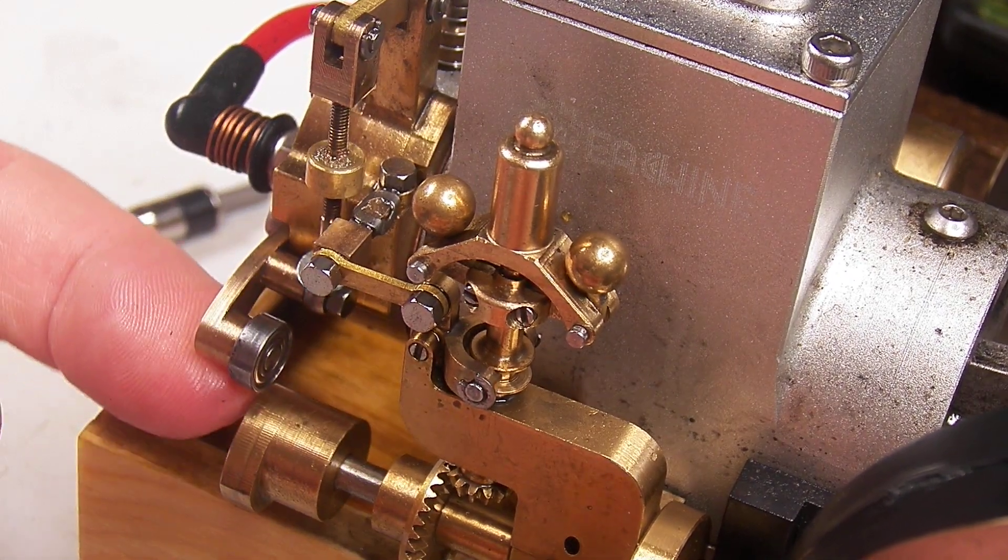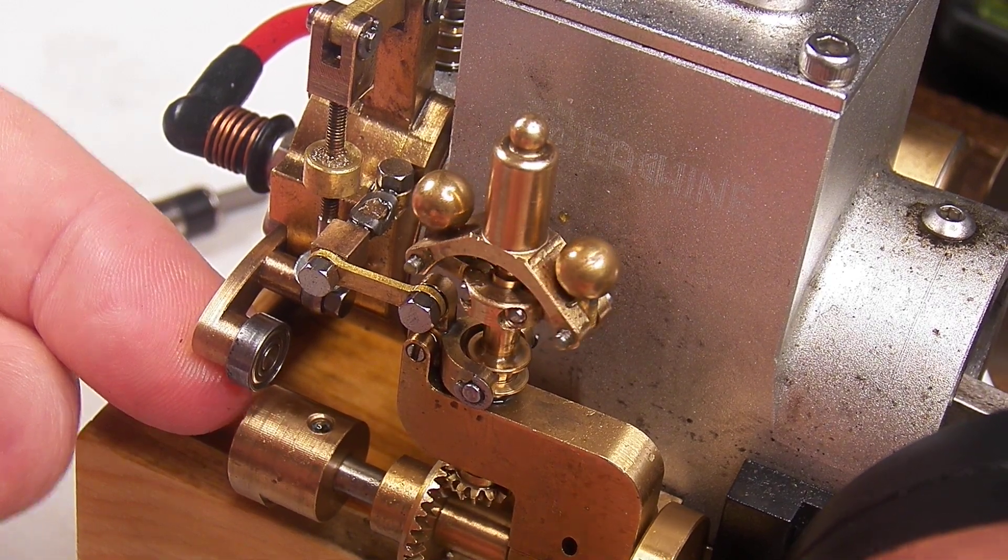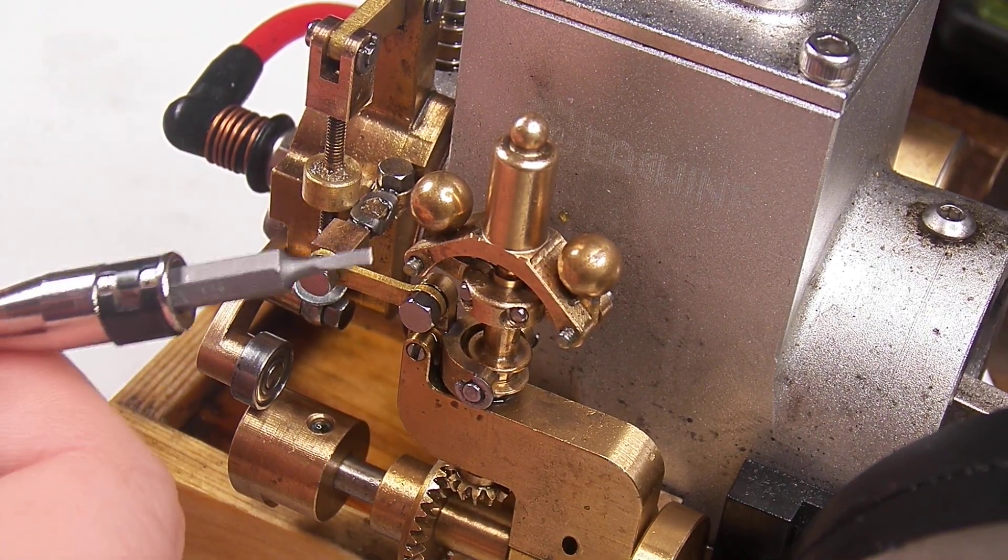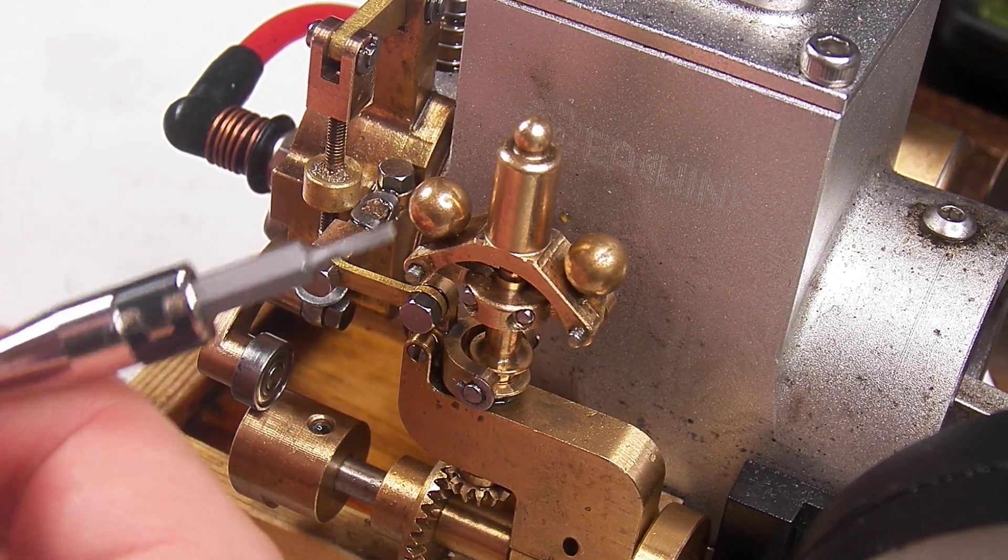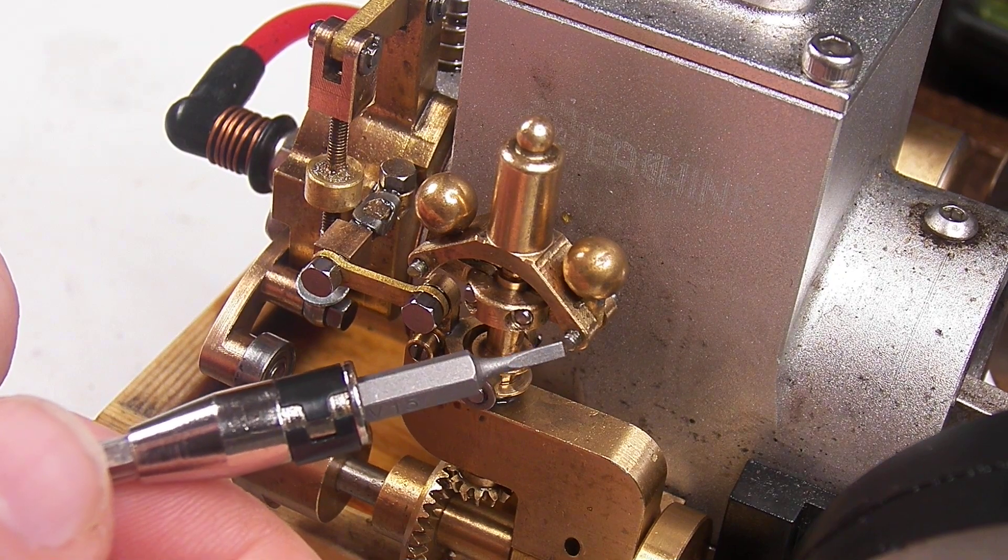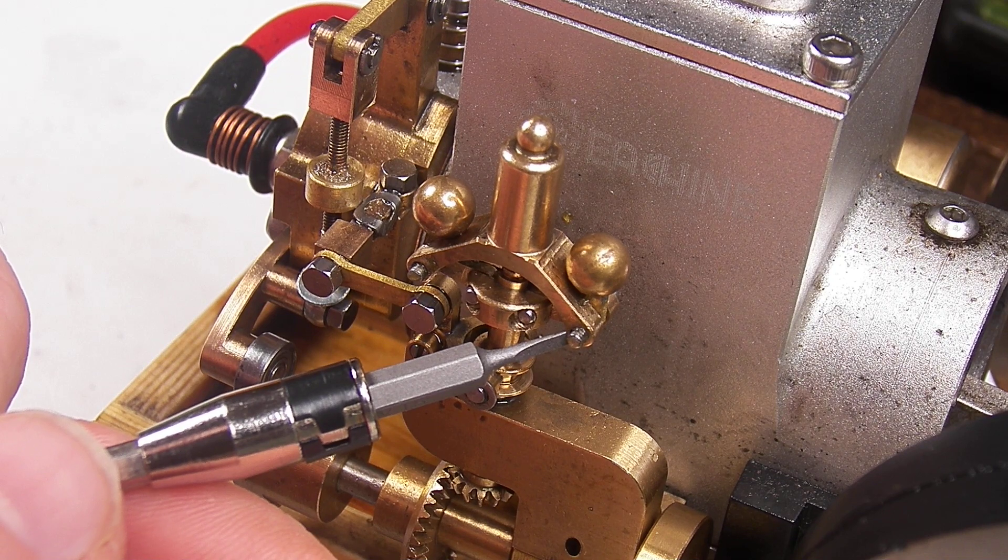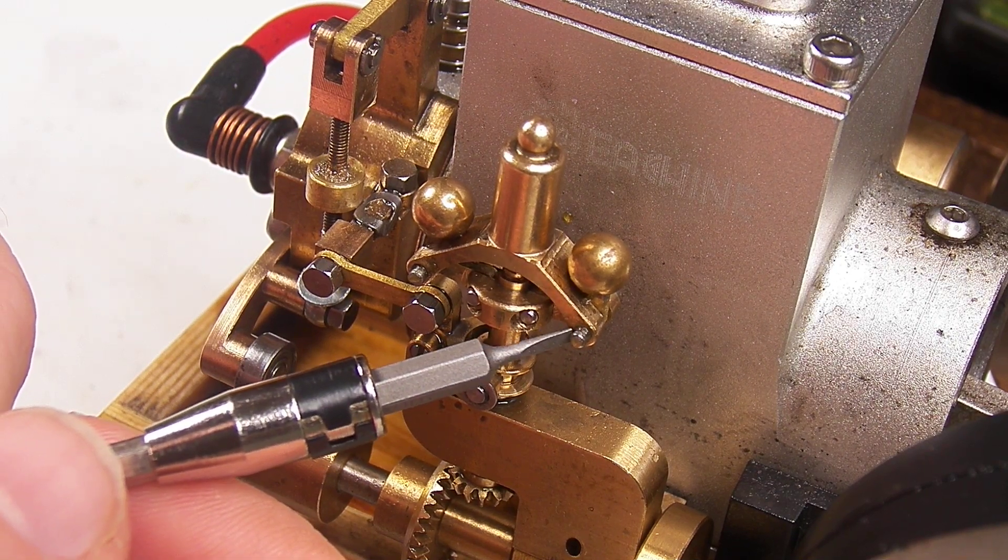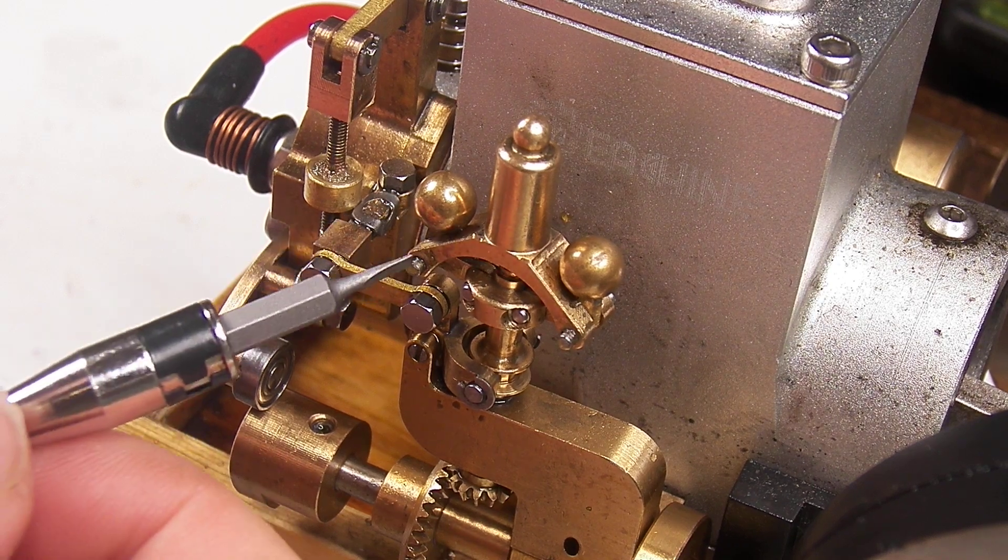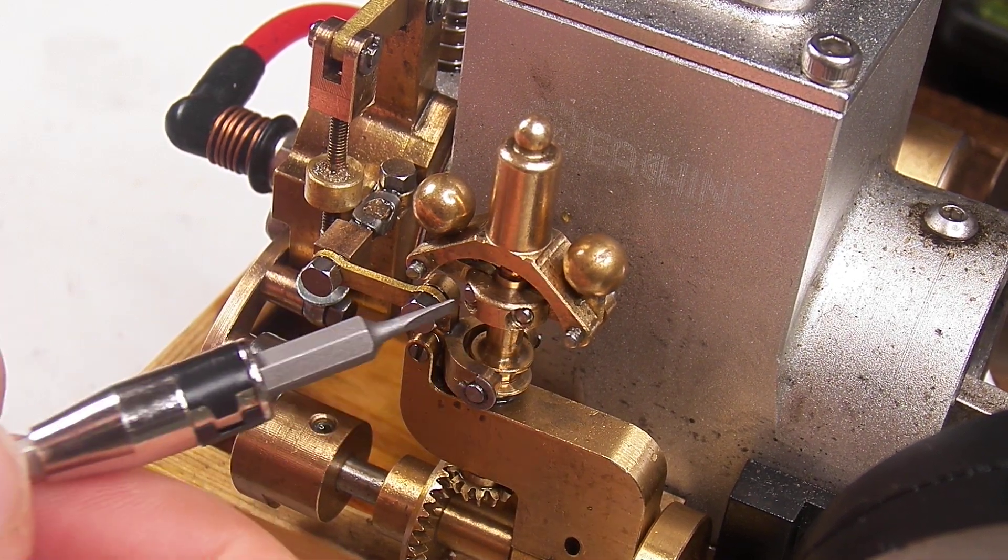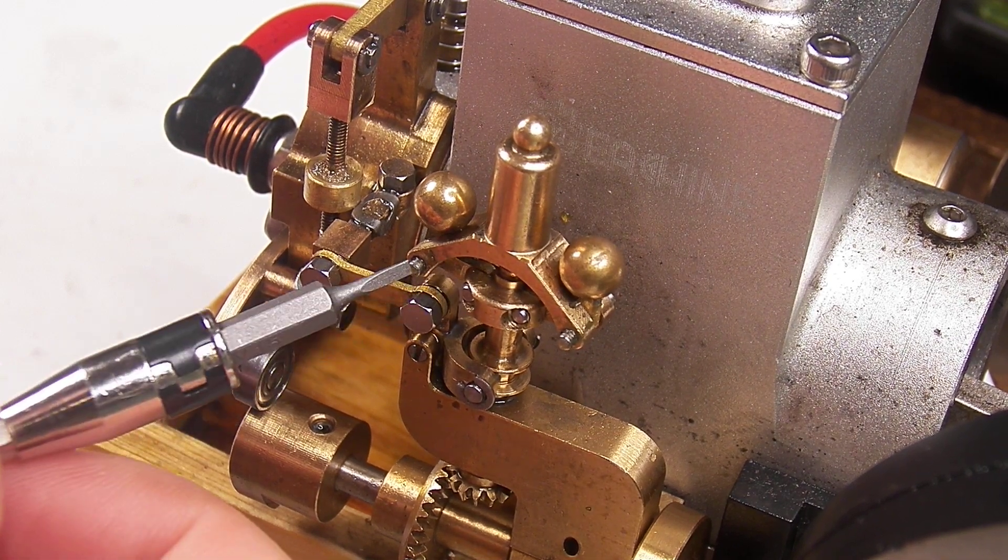On the first time I took this apart there used to be very tiny C clips or E clips on these pins that hold the ball on this end and I lost both of those. So when I put this back together I put a tiny dab of Loctite to hold these pins in place for the balls. You don't have to remove these pins to get the governor apart and that way you won't lose them.